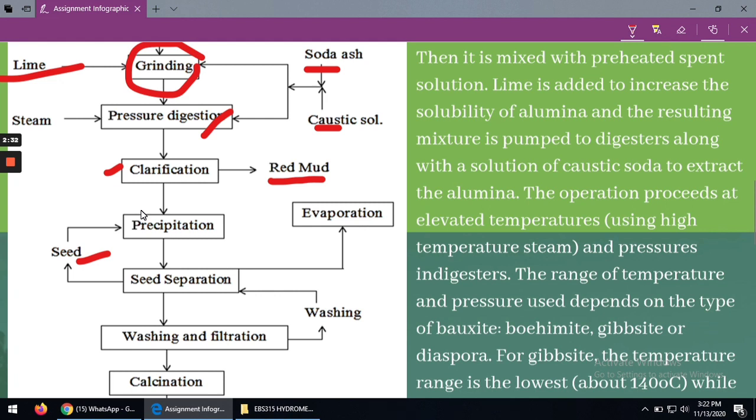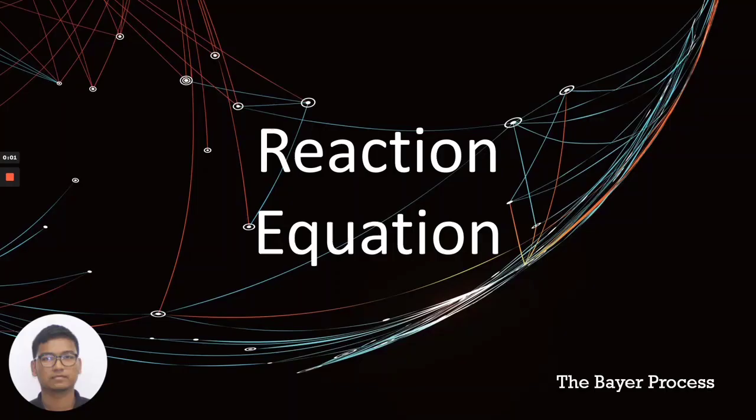The alumina is precipitated as trihydrate crystals which are then washed and calcined in rotary kilns or fluid bed calciners to produce the aluminum oxide or alumina that we want. The rotary kiln temperature is around 1200 to 1300 degrees Celsius to remove water of hydration, which makes the alumina stable for use in the Hall-Héroult process.